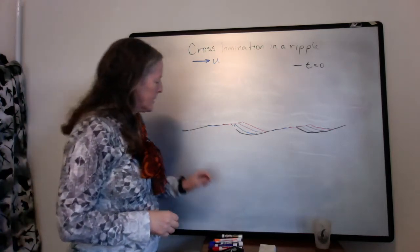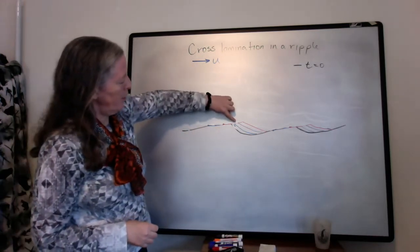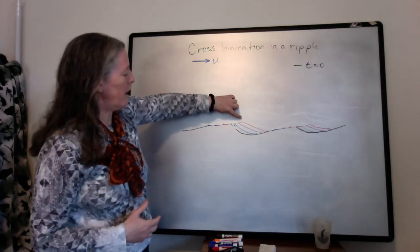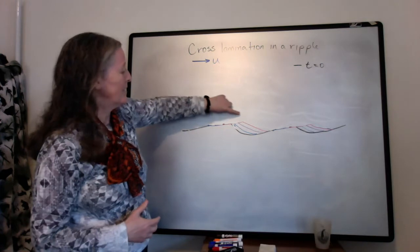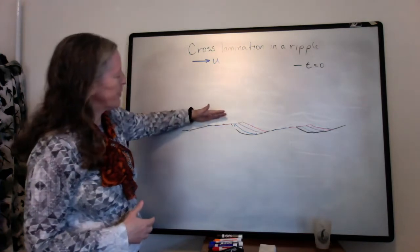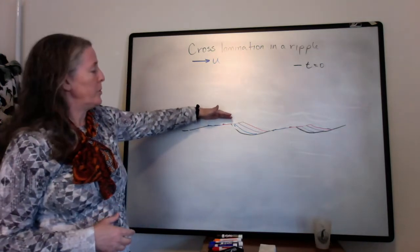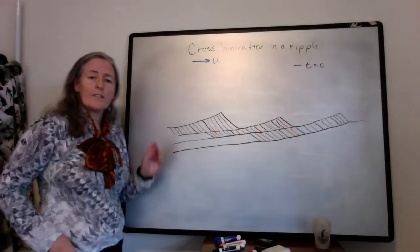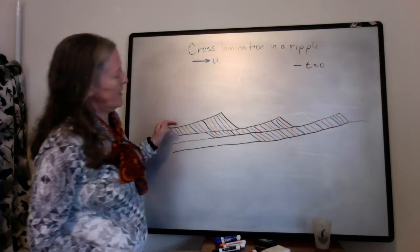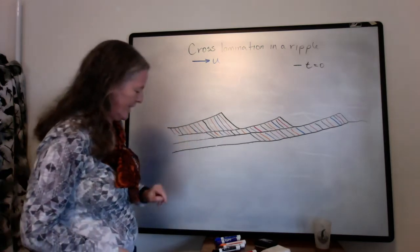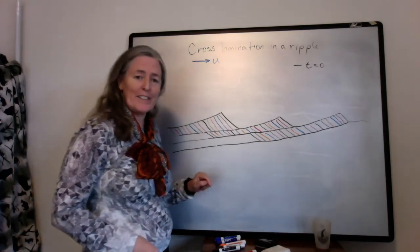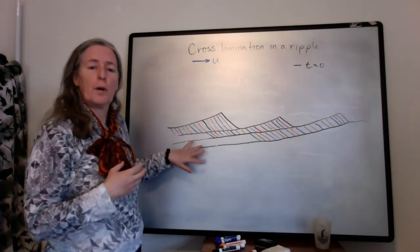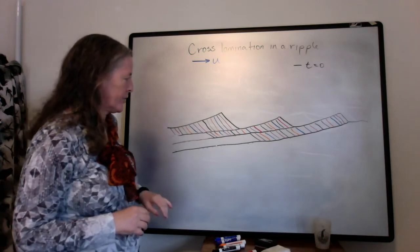So what happens is that through time, you create these lamina, which represent timelines in the rock, that are moving downstream, and you're eroding part of the ripple on the upstream end. Okay, so I've drawn a history of the ripple moving in nice rainbow colors. And this is to give an idea of the connection between the bed form and the cross lamination that you actually see.